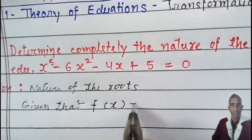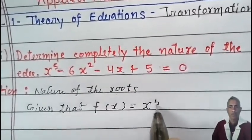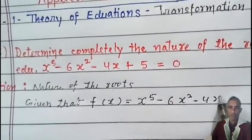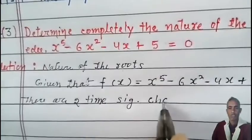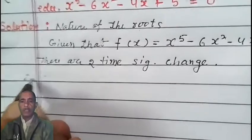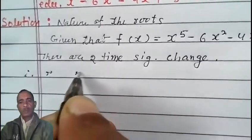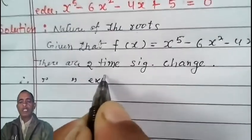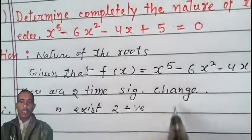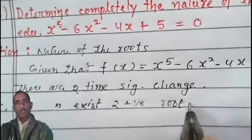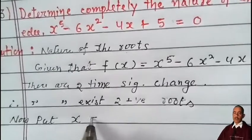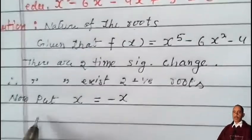Consider f(x) = x to the power 5 minus 6x squared minus 4x plus 5. There are two sign changes in f(x). Therefore, by Descartes' Rule of Signs, there exist two positive roots.